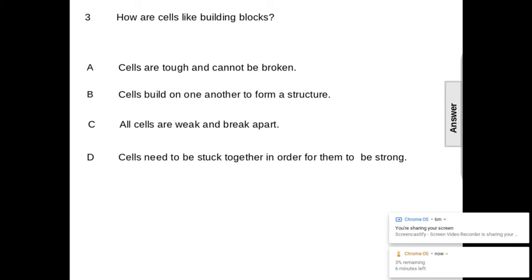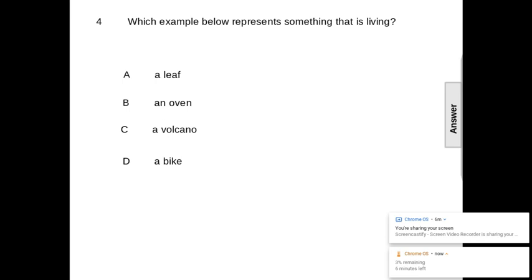Last question is four. Which example below shows something that is living? Which of these is alive? A leaf, oven, volcano, or a bike? The answer is A, leaf. A leaf is alive.